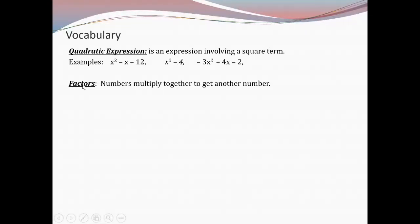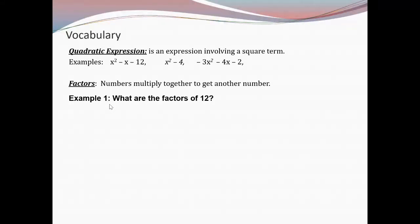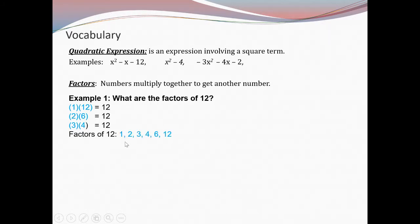Factors are numbers multiplied together to get another number. Example one: what are the factors of 12? We can get it by 1×12, 2×6, and 3×4. So the factors of 12 are 1, 2, 3, 4, 6, and 12.